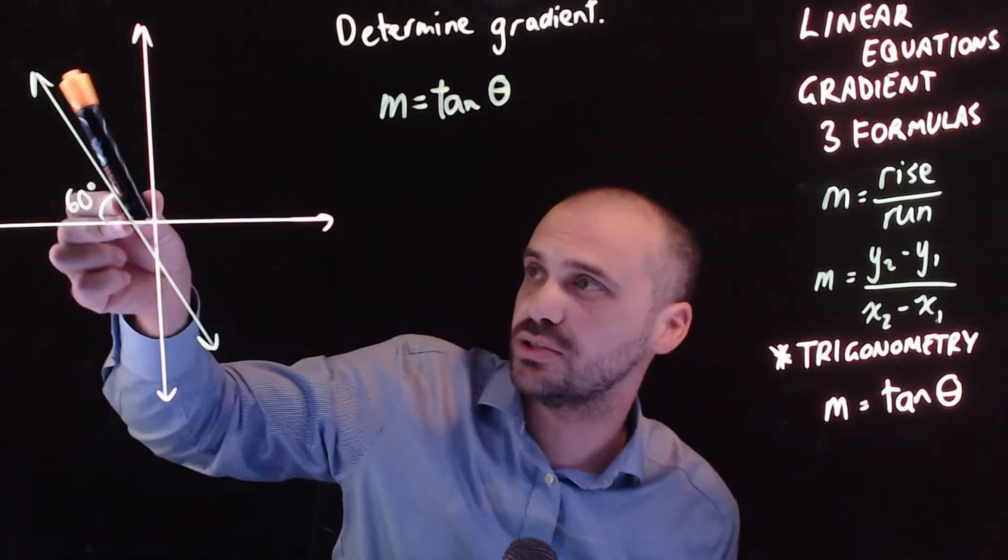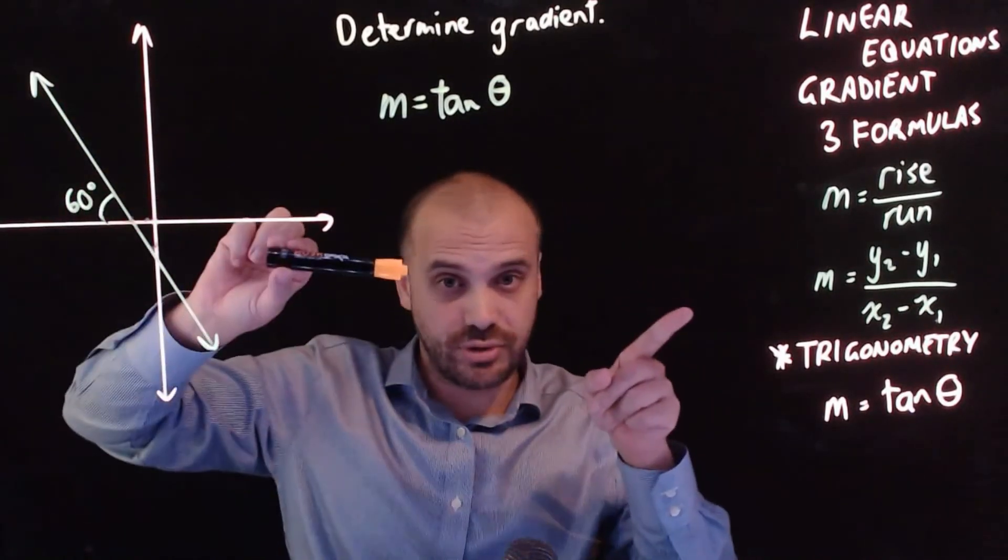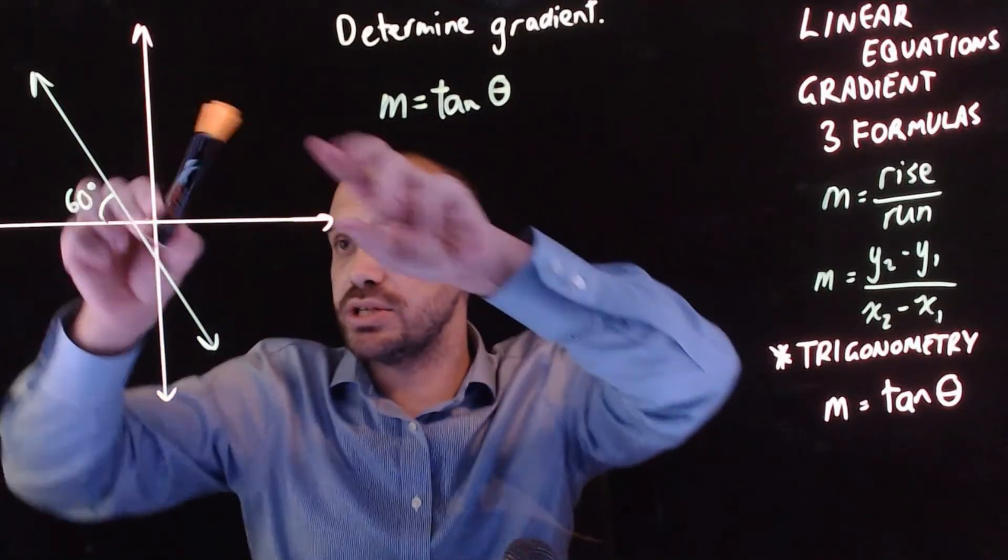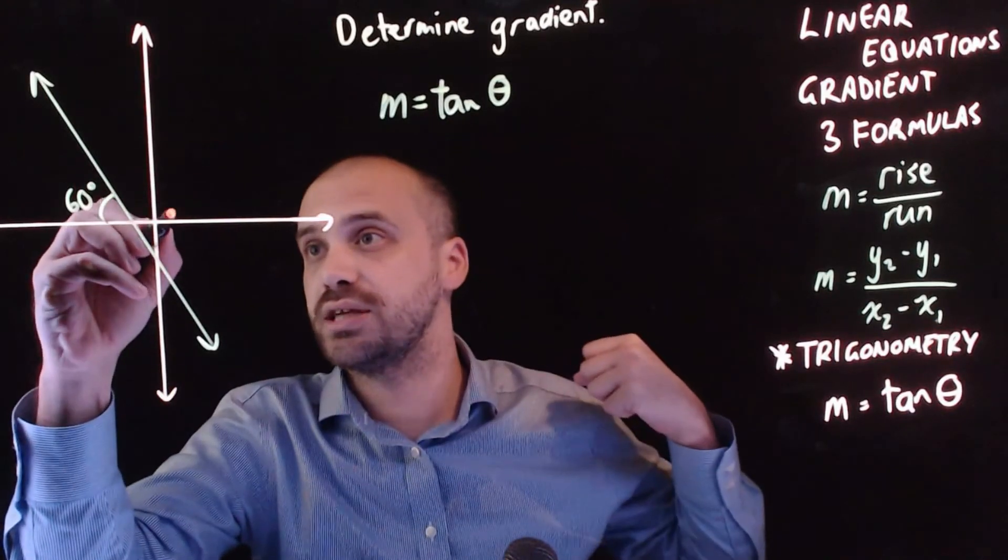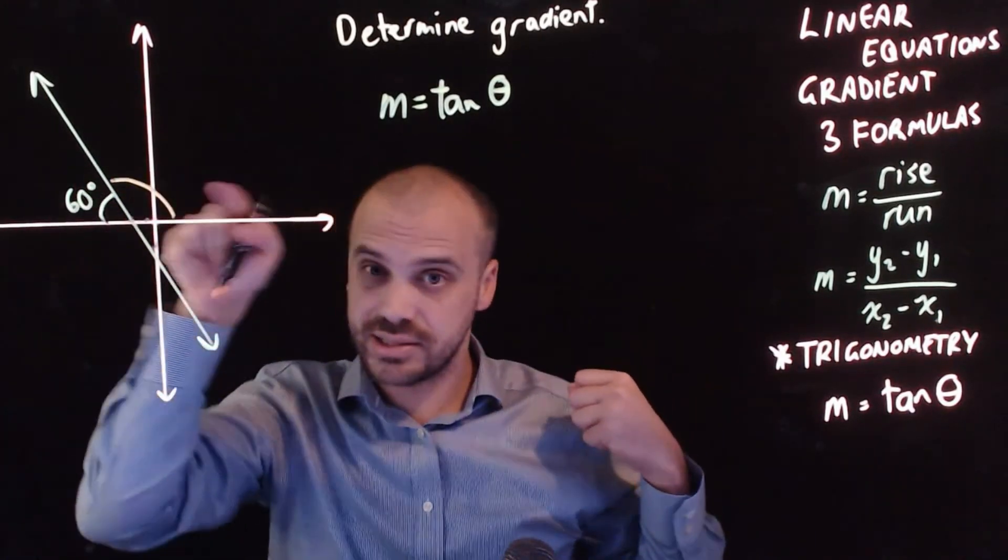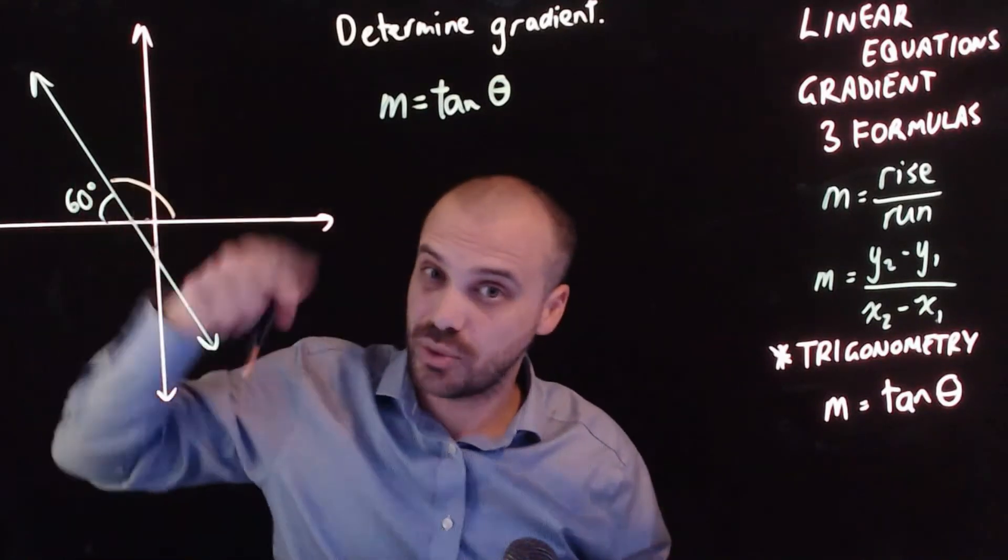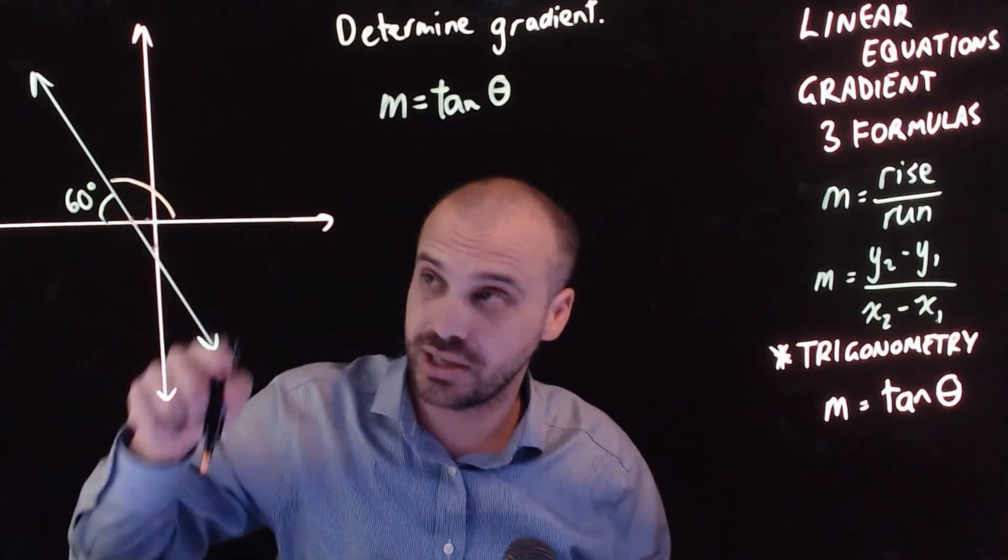And then rotate it until you hit the line. Rotate it until you hit the line. And always rotate it anti-clockwise. When we rotate it we get this angle here. And this is the angle that we use in this equation. Not the angle that this question gave you. That's the wrong angle. We use this angle here.